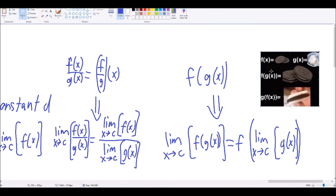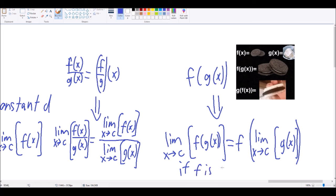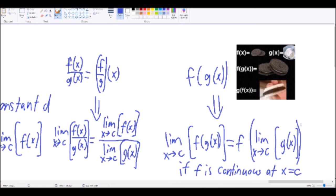but only if f of x is continuous at the point x equals c. So the limit can sneak past functions if they're continuous. Isn't that cool?